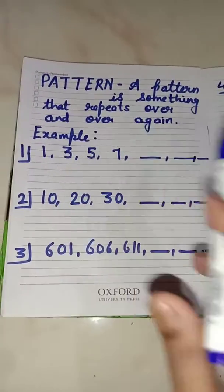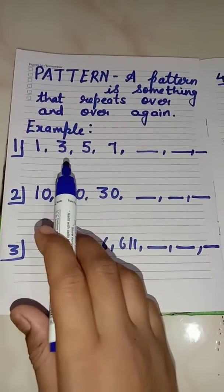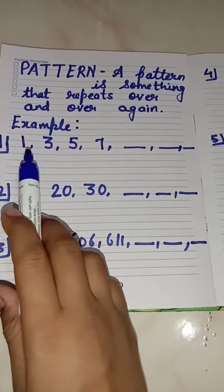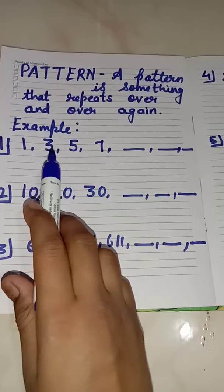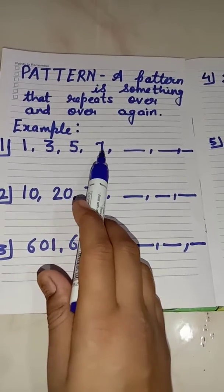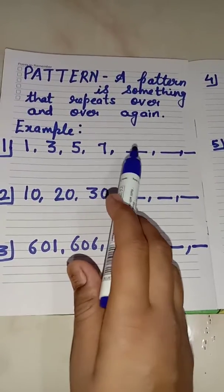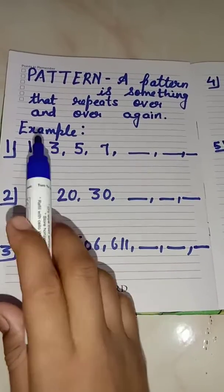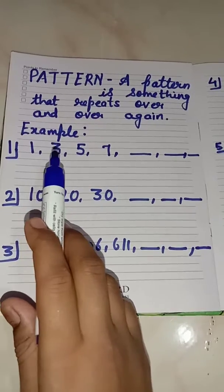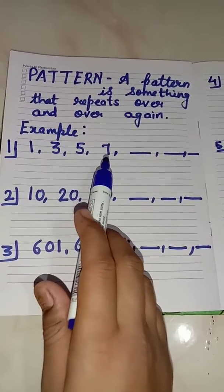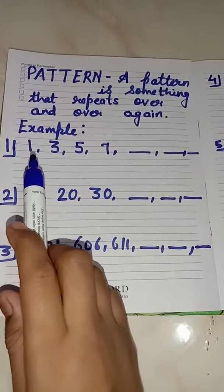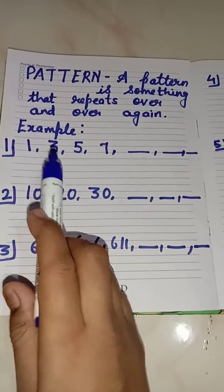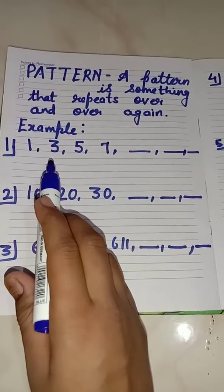So here we have some examples. Let's look at the first example. I have written some numbers: 1, then 3, then 5, and then 7. What comes after 7? We have to find out and observe which pattern is following here. You can see after 1, here is written 3.